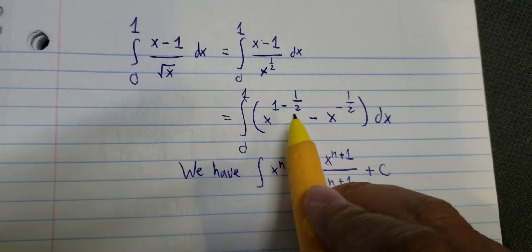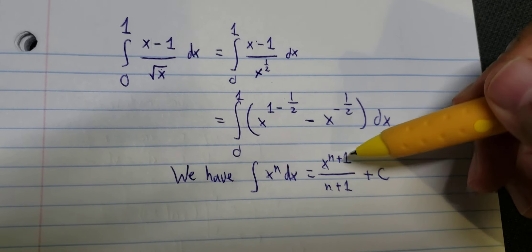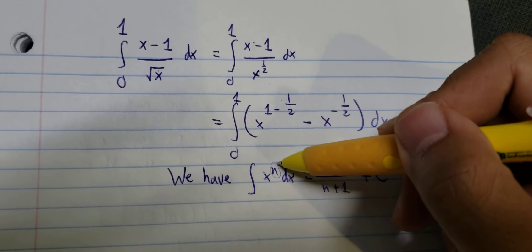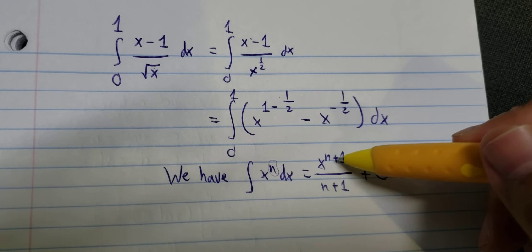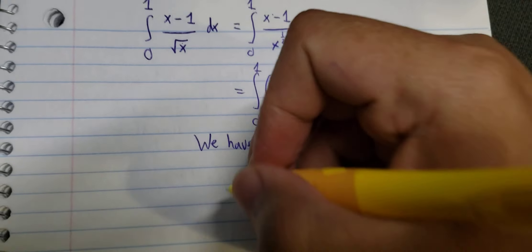So we have one minus one over two, we have one over two. We put this exponent in here, so we have one over two plus one, we have three over two. This one we have three over two.